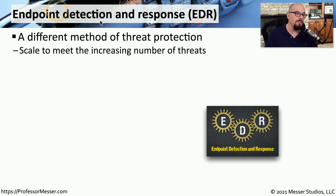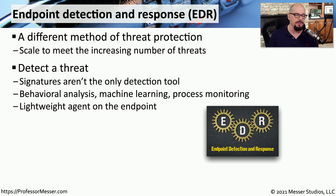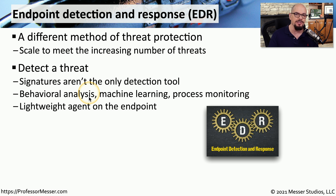To address that, we use Endpoint Detection and Response, or EDR. EDR uses other mechanisms to find malicious software beyond just signatures. Instead of looking for a signature within a file, we can look at what the file is doing. We can use machine learning and process monitoring to identify malicious types of actions on our computer and block those actions rather than blocking a signature. This can be done from a lightweight agent running on the endpoint, constantly watching for these types of problems.